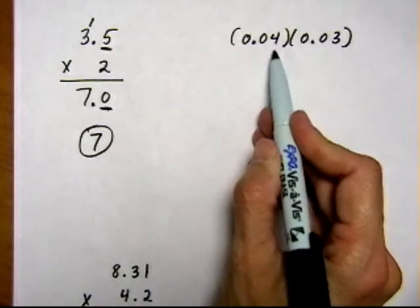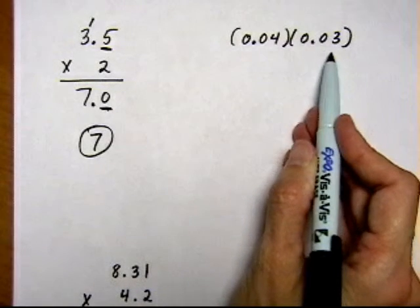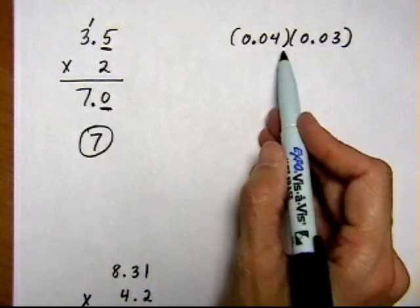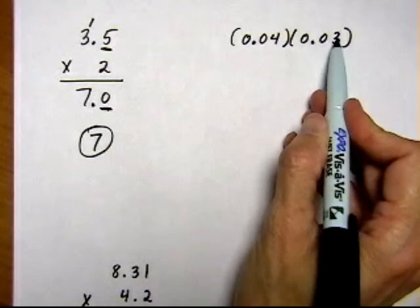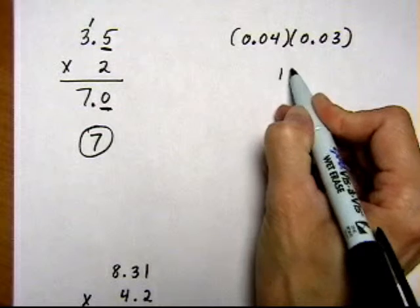So the next one, we have 0.04 times 0.03. Using that same idea, I'm going to ignore the decimal points. And basically what I have is 4 times 3. 4 times 3 is 12. So I put 12.